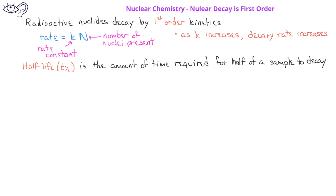is related to the rate constant by the equation t one-half equals 0.693 divided by the rate constant. Since the half-life and the rate constant are inversely related, nuclides with large rate constants have short half-lives and decay quickly.